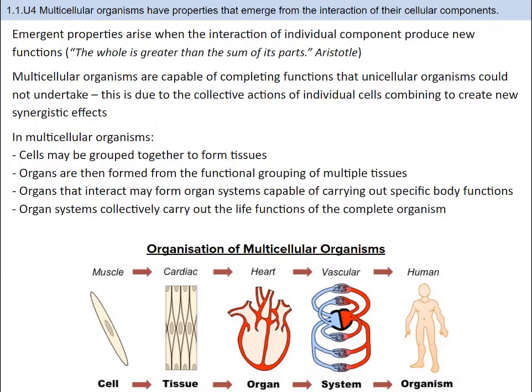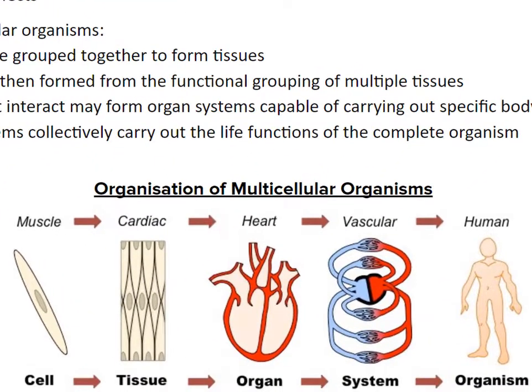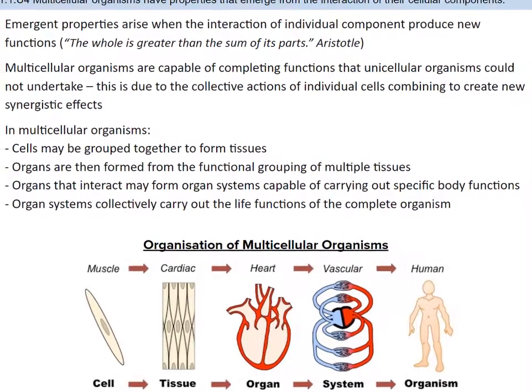Emergence only occurs when the entity is observed to have properties its parts do not have on their own — these properties or behaviors emerge only when the parts interact in a wider whole. For example, each cell carries out functions of life. Working together, the cardiac tissues work to synchronize contractions among cells and pump blood. Additionally, the vessels of the cardiovascular system pump blood throughout the body, and the organism uses the blood to perform all the interconnected functions needed to survive and reproduce. There's a good link to TOK, as emergence as a phenomenon is not unique to biology or the sciences.